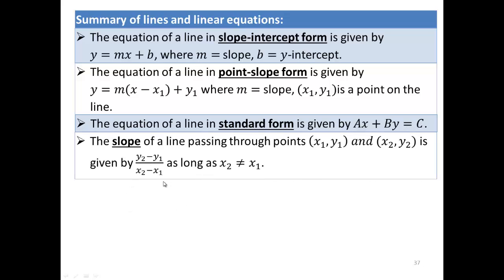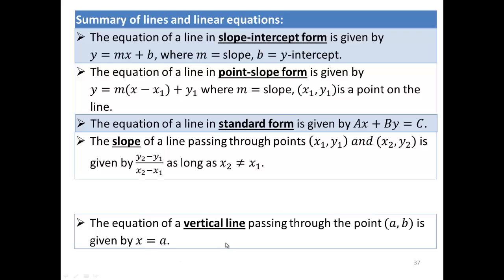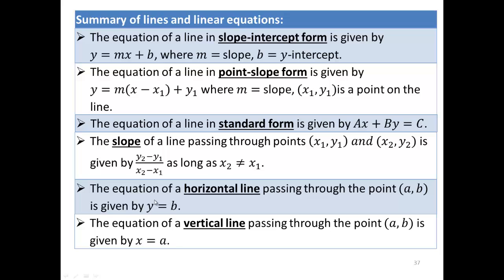Slope is rise over run. So as long as the denominator is non-zero, you can get the slope. And the equation of a vertical line passing through the point (a, b) is given by x equals a. What about horizontal line? You do that on your own. See if you can remember. Horizontal line would be y-coordinate equals b. So the equation of horizontal line is y equals b, and vertical line will be x equals a if you have a line that passes through the point (a, b).